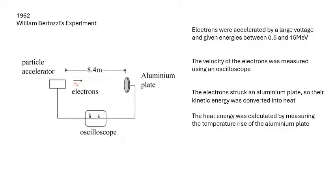Kinetic energy and velocity - this is an experiment you need to be familiar with, done in 1962 by William Bertozzi at MIT, Massachusetts Institute of Technology. Basically what he did was he accelerated electrons and got these electrons moving very fast.